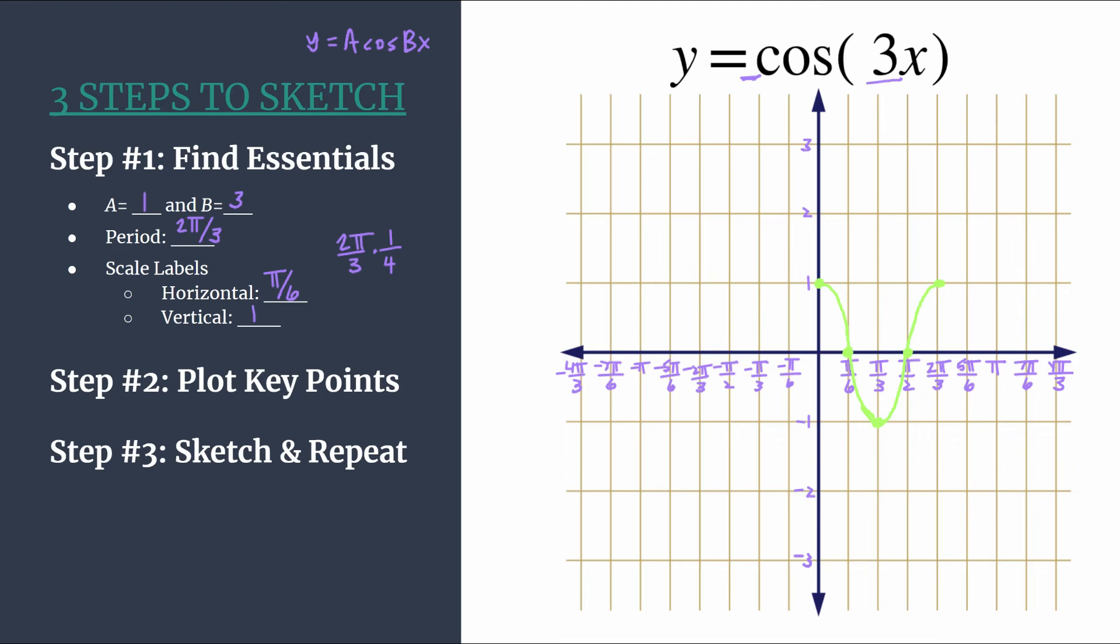We have one cycle we've sketched it and now we can repeat. This part is surprisingly easy, you just duplicate the pattern that you've already done and it'll just come in rounds of 4. So we start at that maximum, 0, minimum, 0, maximum. We could keep going but we're out of space.